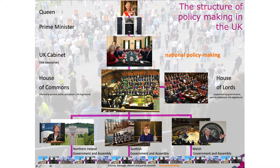Parliament — the House of Commons and the House of Lords — is also called the Legislature. The House of Lords is made up of members who are appointed by government; they are made lords. Below that we have the devolved administrations — the Scottish Government and Assembly, the Welsh Government and Assembly, and Northern Ireland Government and Assembly — who have elected members of their own assemblies and parliaments. And below that we have the county, borough, district and parish councils with elected councillors and an executive of paid civil servants such as chief executives and directors.